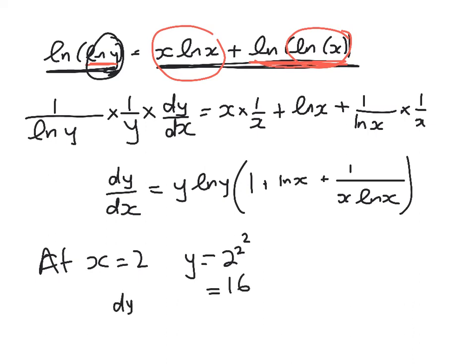So dy by dx is equal to 16 log 16 times all of this, which gives me a final answer of, I'll just squeeze it in there, 107.1.